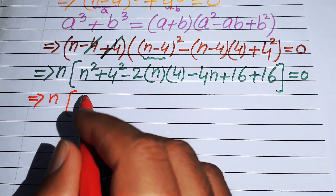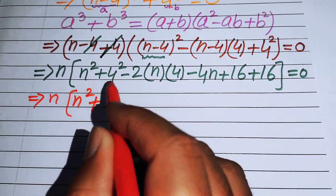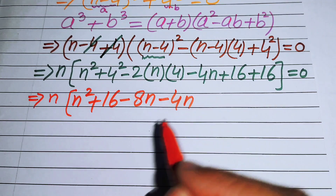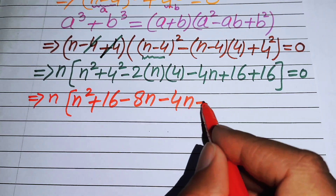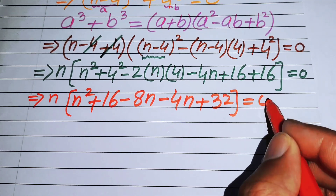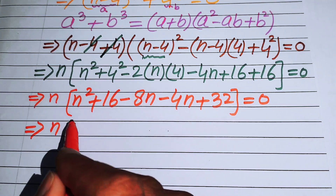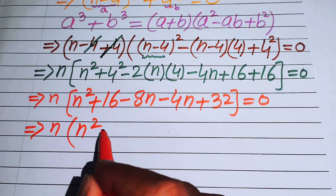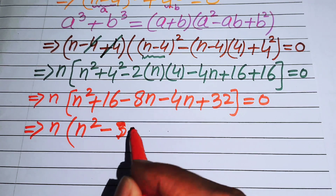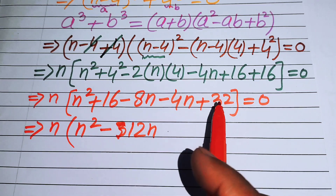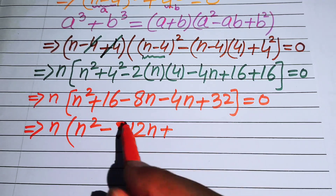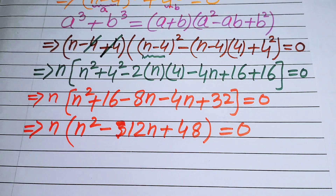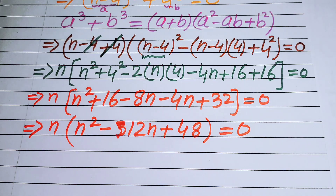Simplifying further: n times (n² + 16 - 8n - 4n + 16 + 16) = 0, which gives n times (n² - 12n + 48) = 0. Combining like terms: n² - 8n - 4n equals -12n, and 16 + 16 + 16 gives 48.